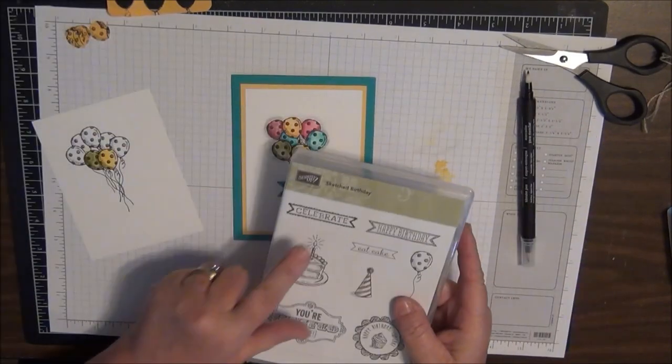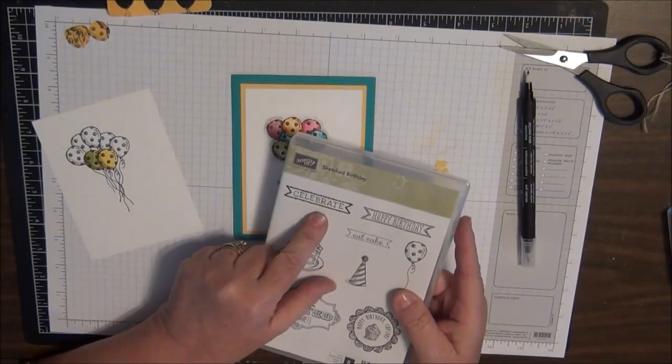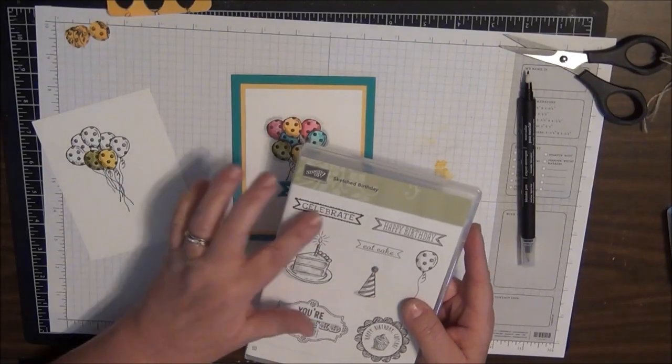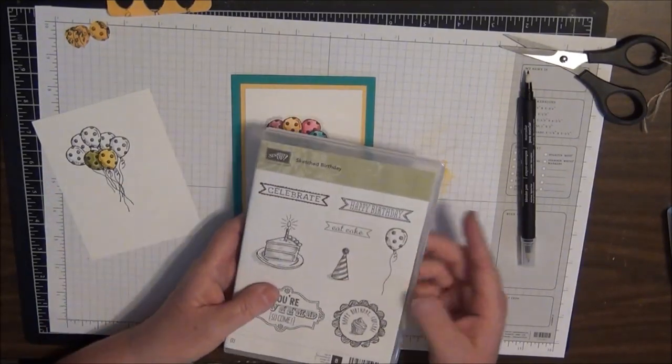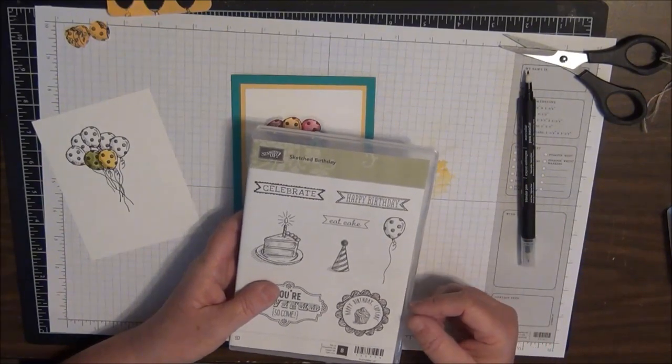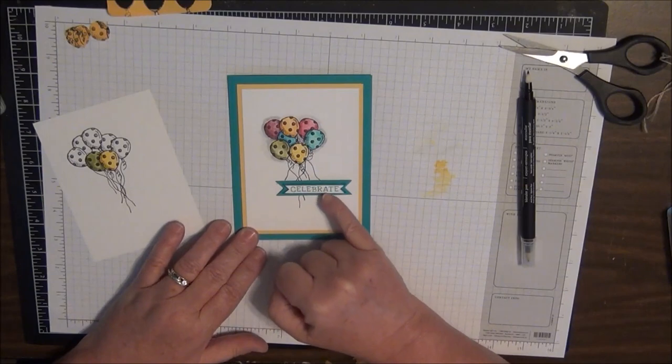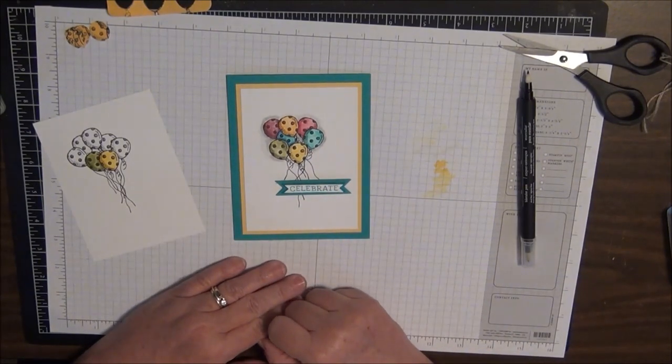Let me go ahead and show you, this Celebrate image is also in the stamp set, right here. And this matches our Itty Bitty Banners Framelit set, which is nice because you can stamp it and then you can cut it out with your scissors and you don't have to worry about actually cutting it with your scissors, although I did cut the little Celebrate out and mounted it on top.